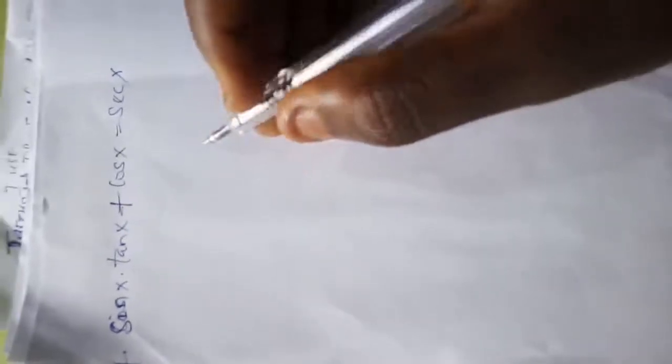So this is the fourth problem. The fourth problem says sine x times tan x plus cos x is equal to sec x. We're asked to verify and prove that the left hand side is equal to the right hand side.